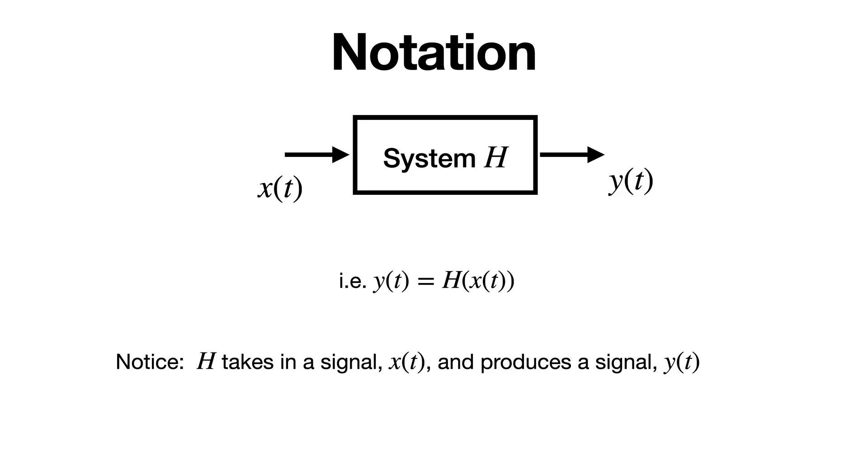It's very common to see inputs represented by x of t and outputs represented by y of t. That's just very common standard notation. So if you see x, usually it's an input going into a system, and y is usually considered an output going out of a system.